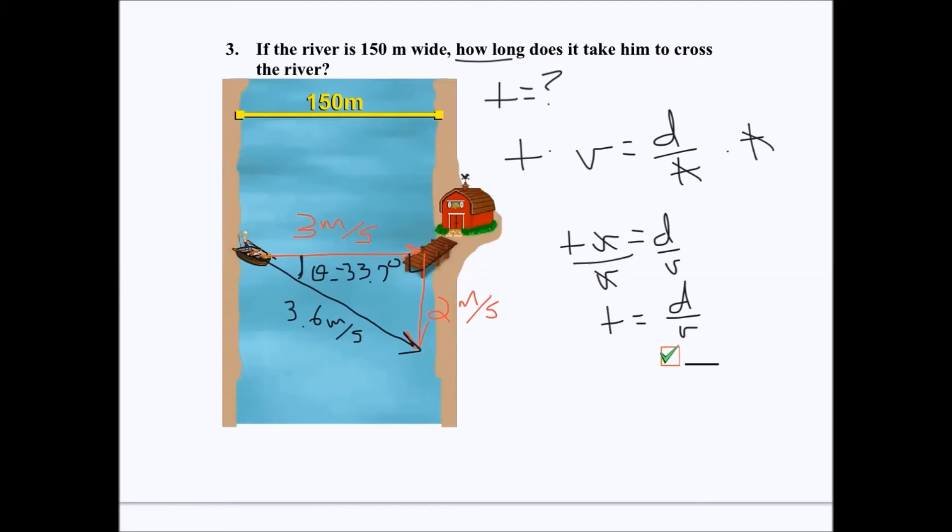So we need to make sure the displacement and the velocity are pointing the same direction or this equation is not being used correctly. Note that I put a little e on the displacement and the velocity to represent that this is the displacement that's going east, and I need the velocity that goes east too. So I've plugged in 3 meters per second and not 3.6 meters per second, which is a common mistake. And you get the time of 50 seconds.